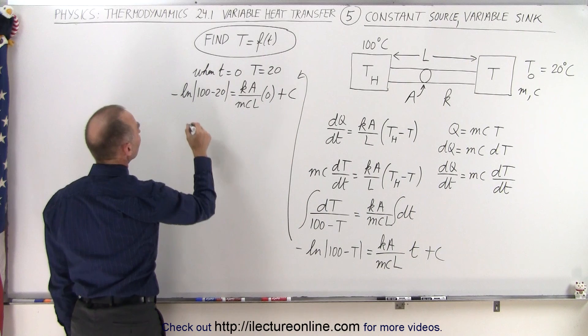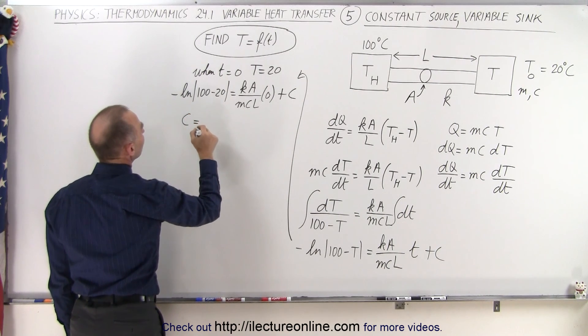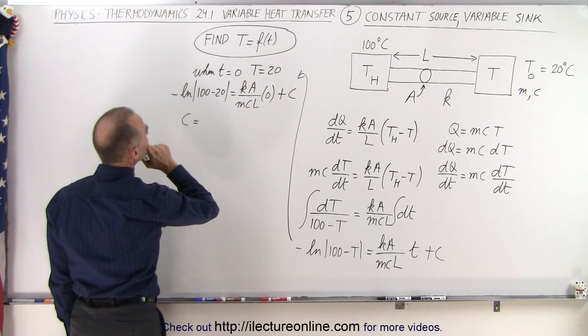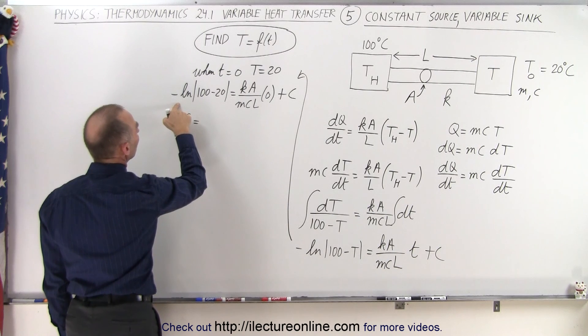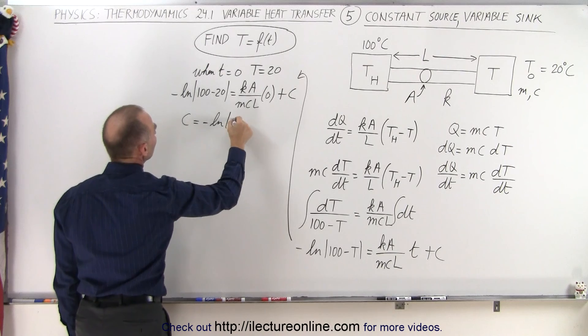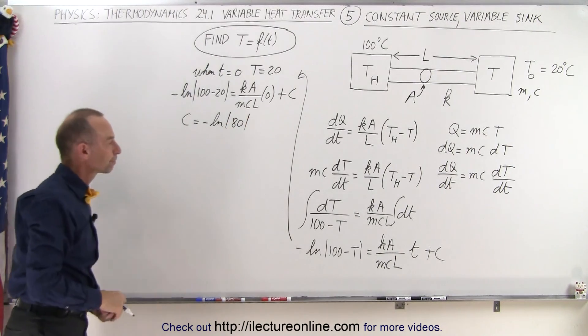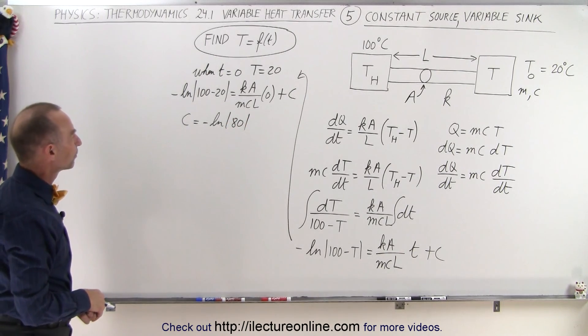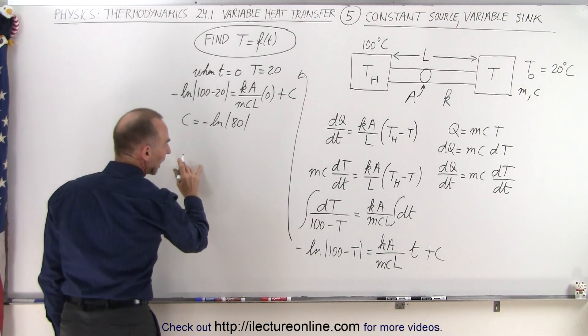Which means that the constant of integration is equal to minus the natural log of 100 minus 20. So it would be minus the natural log of 80. All right. So let's go ahead and plug that in and see what we get.